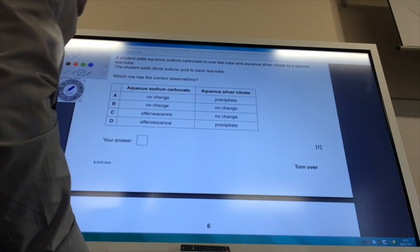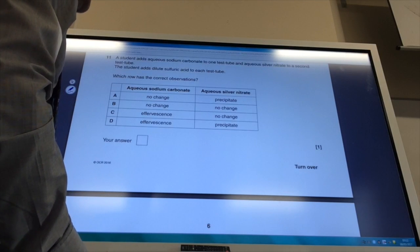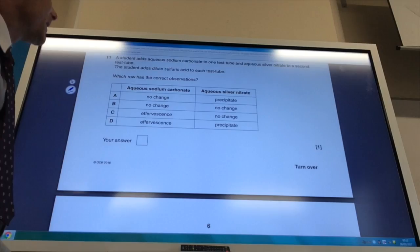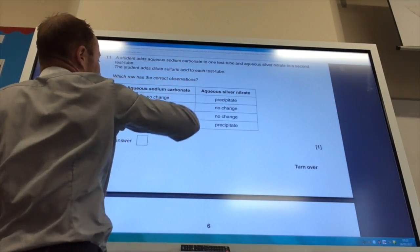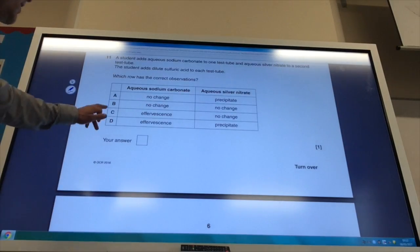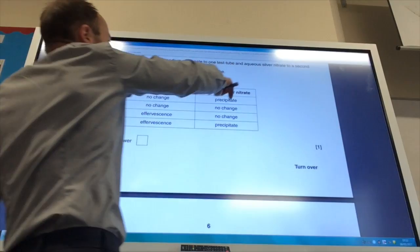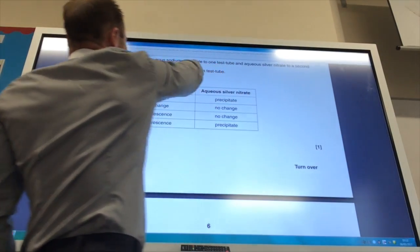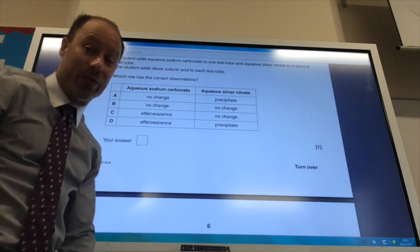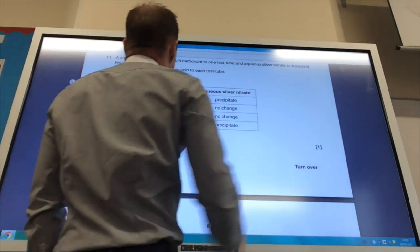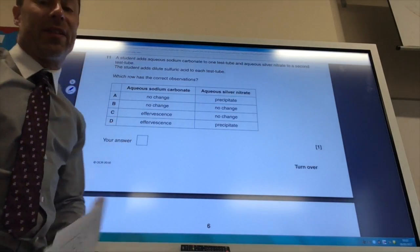A student adds aqueous sodium carbonate to one test tube and silver nitrate to a second, then we add sulfuric acid to each test tube. What will I see? I've got an acid and a carbonate for this tube so I would see it fizz, so it's either C or D. Silver nitrate will react with sulfuric acid to give me a precipitation reaction of silver sulfate, so I see a precipitate of silver sulfate. The answer is D.